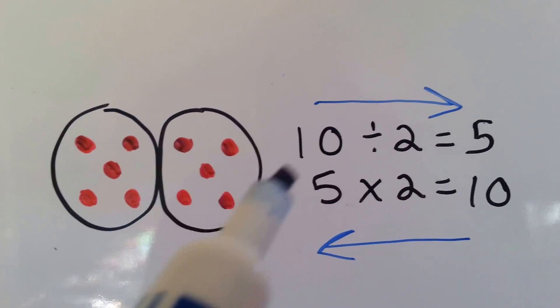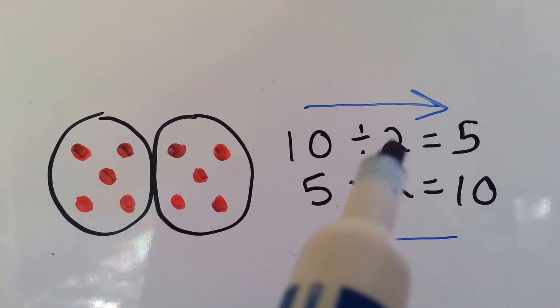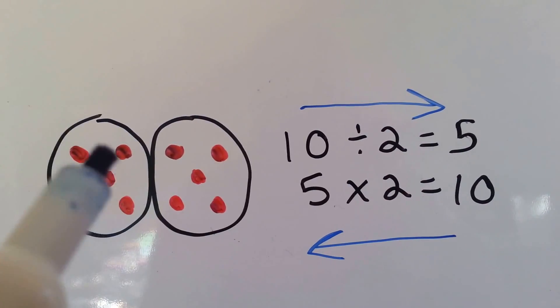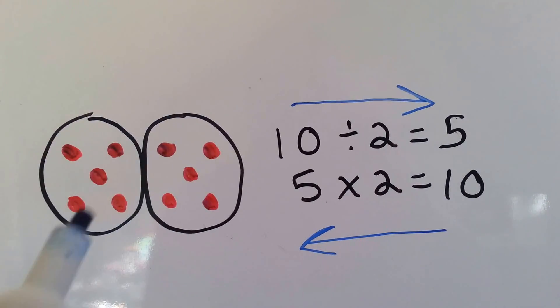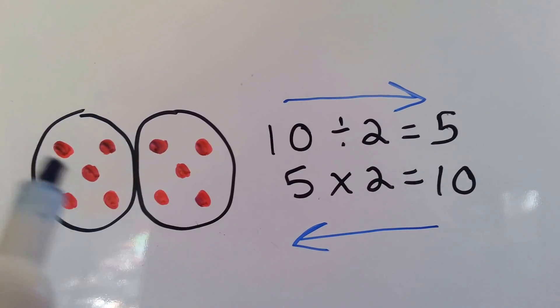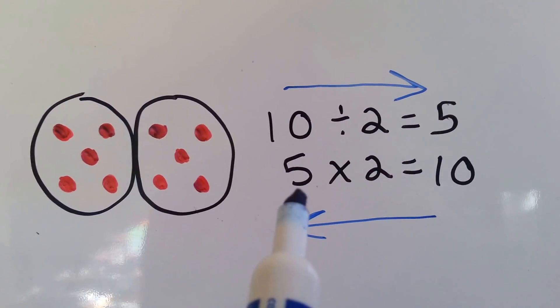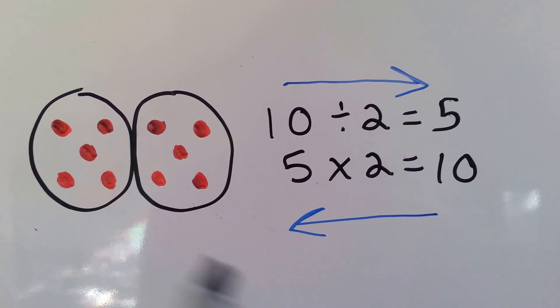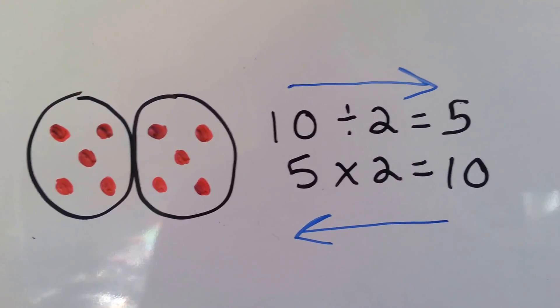We have 5 and 5, which is 10. So we have 10 dots divided into 2 groups, and there's 5 in each one. So 10 divided into 2 is 5. Or we could say we have 5 two times, and 5 times 2 is 10.